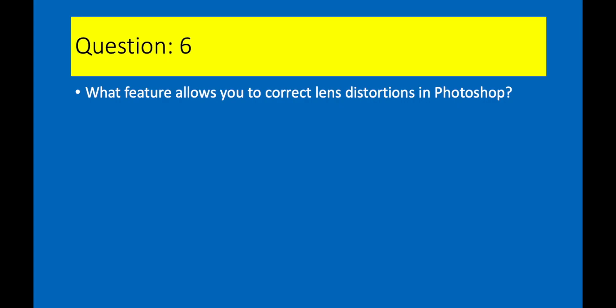Question 6. What feature allows you to correct lens distortions in Photoshop? Answer 6. Lens Correction filter.